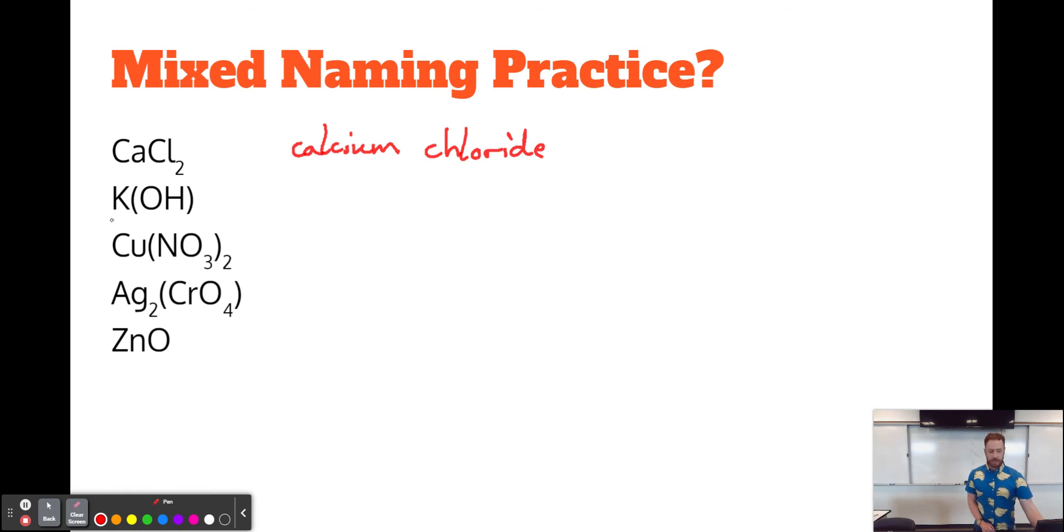The next involves potassium. And then we see something in parentheses, which is a clue. That's a polyatomic ion. So it's potassium and OH, which is hydroxide. So this is potassium hydroxide.